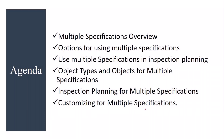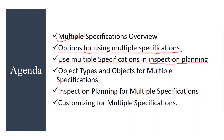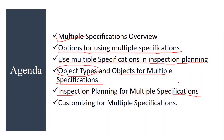We will see a multiple specifications overview and options for using multiple specifications. What are the different options available? We will see how multiple specifications are used during the inspection planning activity. Then object types and objects for multiple specifications — what are these object types and different objects used during multiple specifications. Finally, we will see customizing settings for multiple specifications.